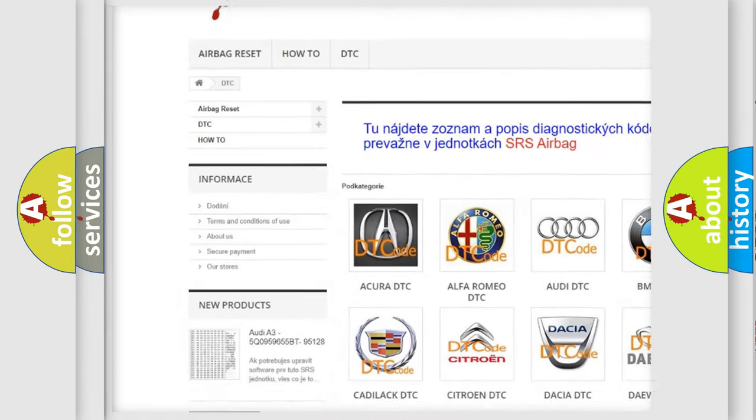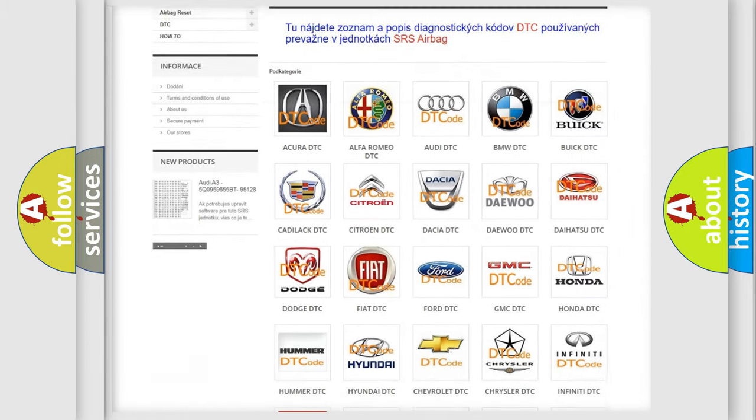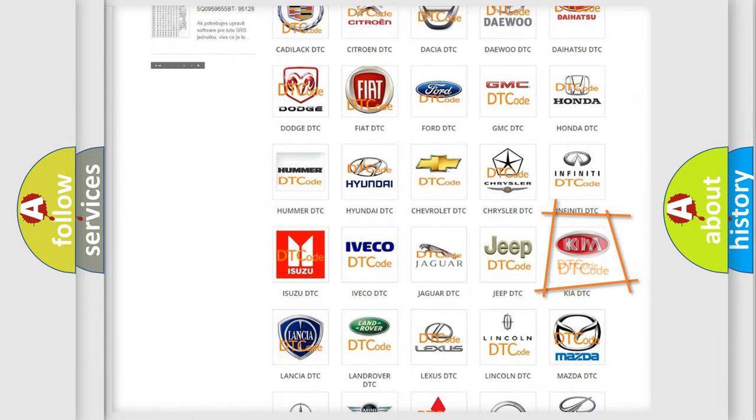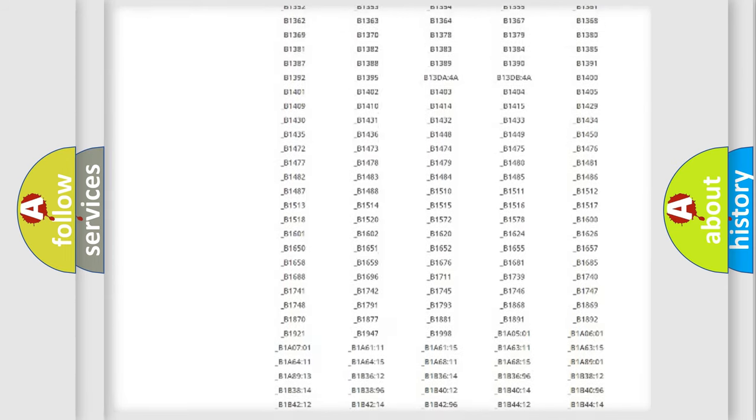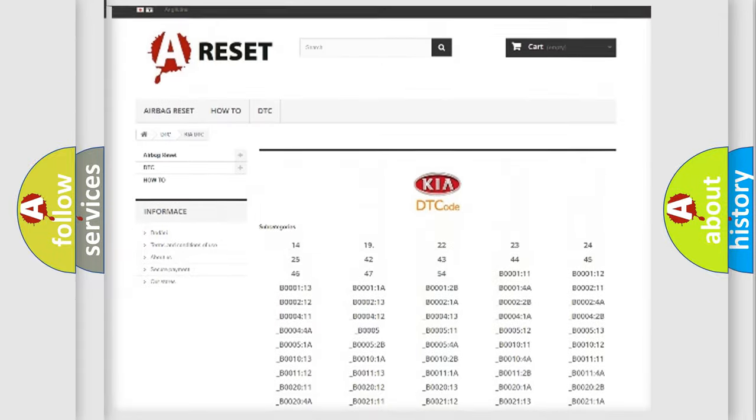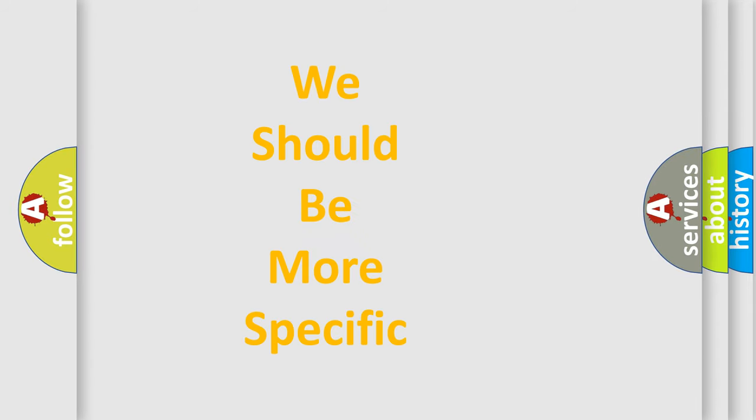Our website airbagreset.sk produces useful videos for you. You do not have to go through the OBD2 protocol anymore to know how to troubleshoot any car breakdown. You will find all the diagnostic codes that can be diagnosed in KIA vehicles. Also many other useful things. The following demonstration will help you look into the world of software for car control units.